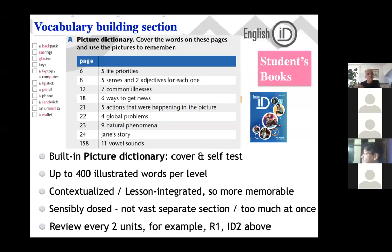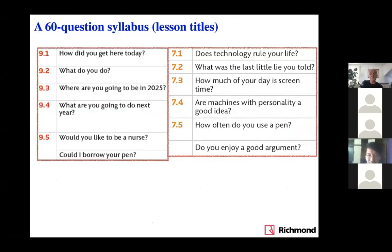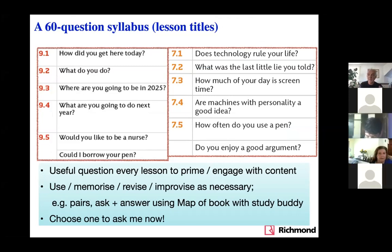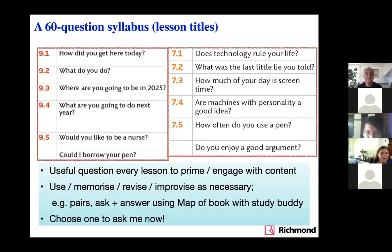These are the sorts of tasks I'd set students using English ID for online classes — catch-up work, alone time, fill-in time at the beginning of class before turning the camera on. 'Flipping' as in see it first, then polish with the teacher. Another activity I really like: all the question-type lesson titles in English ID are questions, so you have a syllabus great for memorizing. If students have study buddies, they can ask and answer these questions before or during class. Would Ximena like to choose one to ask me now — just to prove it works? What are you going to do next year?